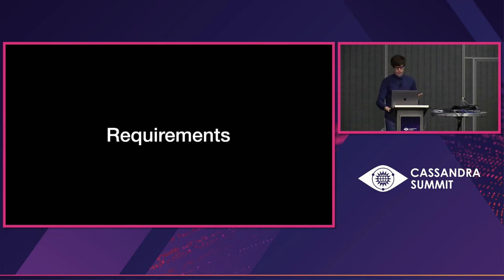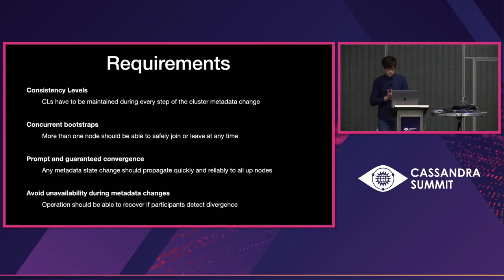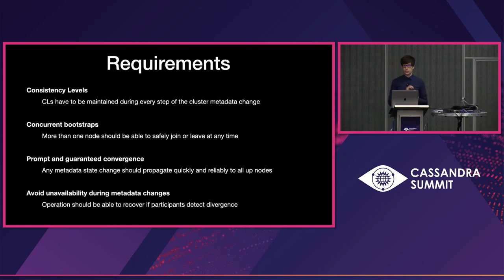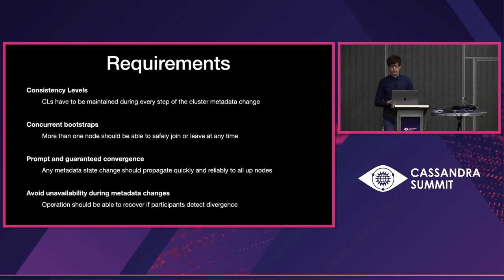Let's now set up the requirements for what exactly we're trying to achieve. First, we would like to remain honest about the consistency levels — even during range movements; this is a non-negotiable correctness requirement. We would also like safe concurrent bootstraps: multiple nodes should be able to join and leave the cluster, and you should need zero knowledge of Cassandra internals for that. Lastly, metadata changes should be completely transparent for the user — clients should see nothing during range movements, not even a single unavailable or timeout.